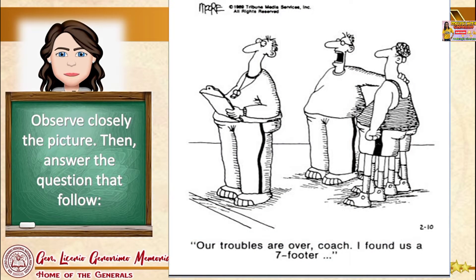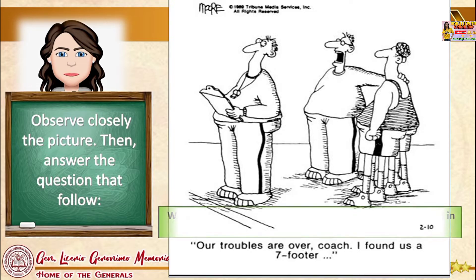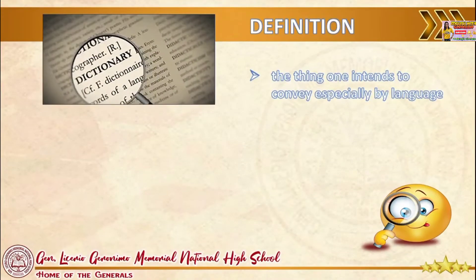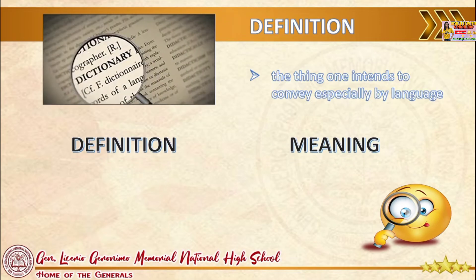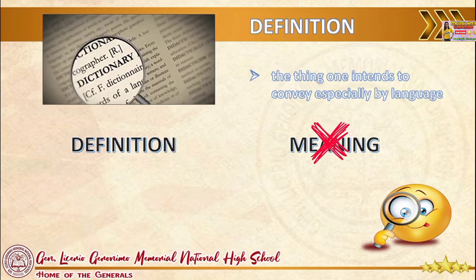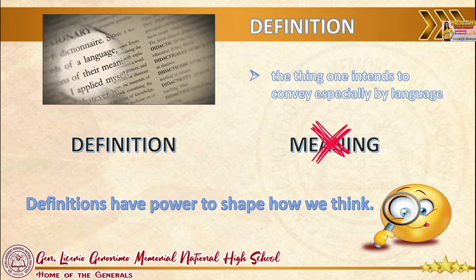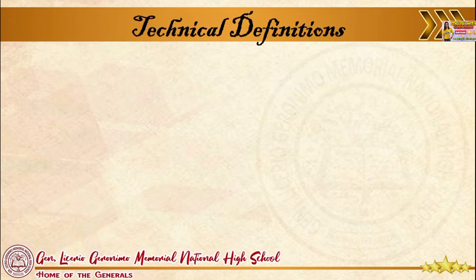Before we proceed, let us observe closely the picture, then answer the question that follows. What could happen if a word or phrase is not understood in the same way by everyone on a team? The possible answer: if a word is not understood the same way by everyone, it could lead to misunderstanding. Do not mistake definition with the word meaning, as they are different from each other. These definitions may limit how we think about our world. Definitions have power to shape how we think. In today's lesson, you will learn how to give technical and operational definitions.